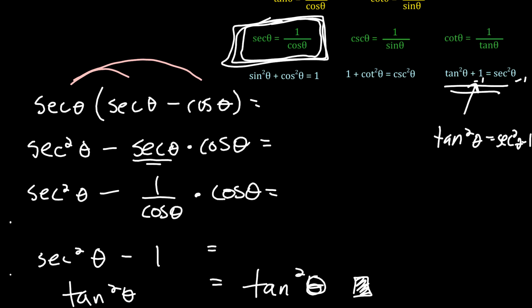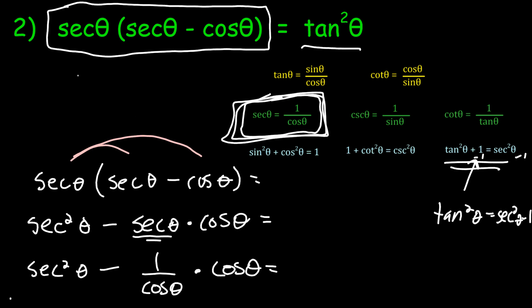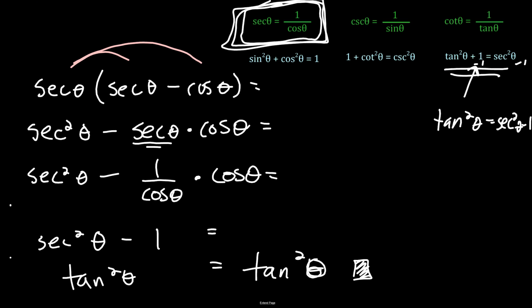Once we get our left side to equal what we want on the right side, the proof is done. One thing that's tempting is wanting to work with both sides — you cannot do that in a proof. You have to stick with one side. In this case we worked on the left side and showed it turns into tangent squared. You could also start with tangent squared and turn it into the left side, but you have to work with just one side of the original problem.